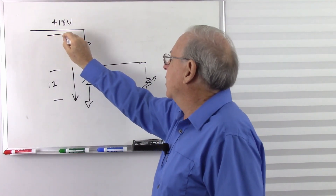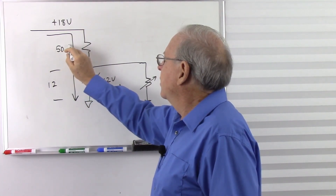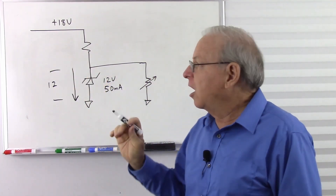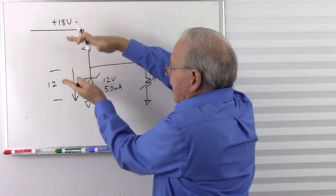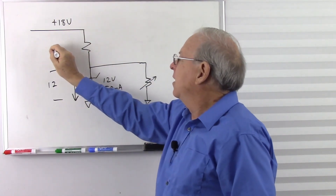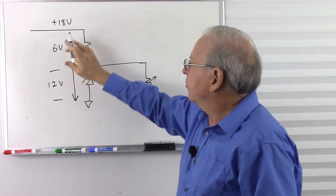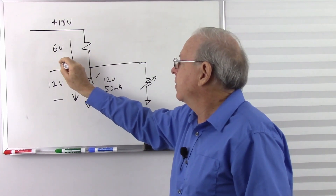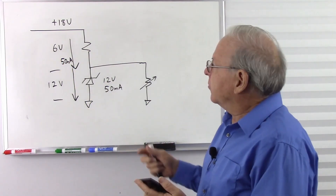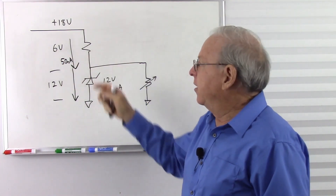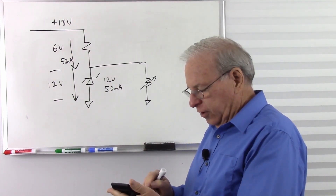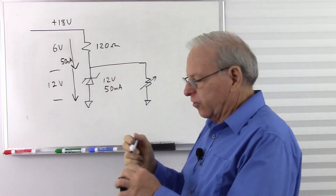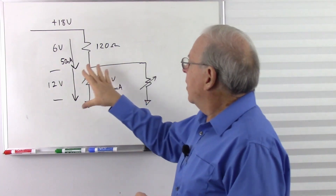So where is that current going to come from? It's going to come through that resistor. We have 50 milliamps going through it. By Kirchhoff's voltage law, our total voltage is 18 volts, and the two other voltages have to add up to that — so 12 volts plus 6 volts equals 18 volts, which means we have 6 volts across this resistor. We want 50 milliamps, so by Ohm's law: 6 volts divided by 0.05 amps equals 120 ohms.